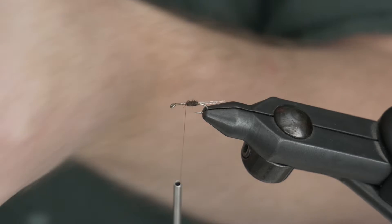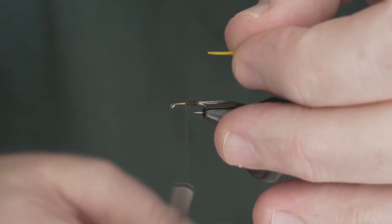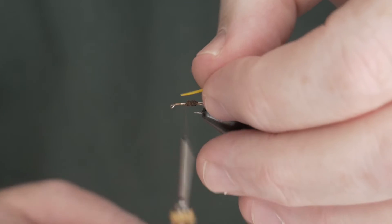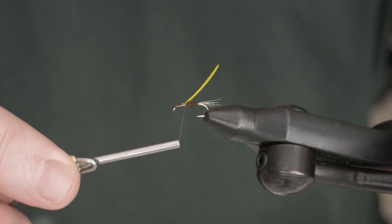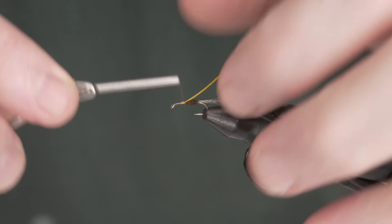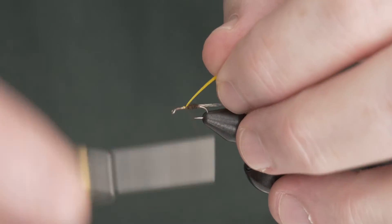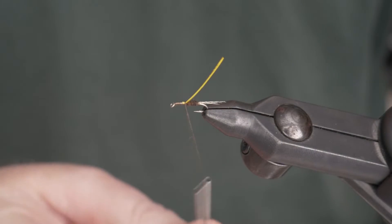Once we're halfway up the shank I'm going to tie in some yellow goose biot. This is what's going to give us the appearance of that wing case splitting open and the yellow mayfly coming out. So, I'm going to take the tip side, just trim a little tiny bit off the tip, and tie this in. This is important that we keep this right on the top of the fly. A few wraps to secure it.